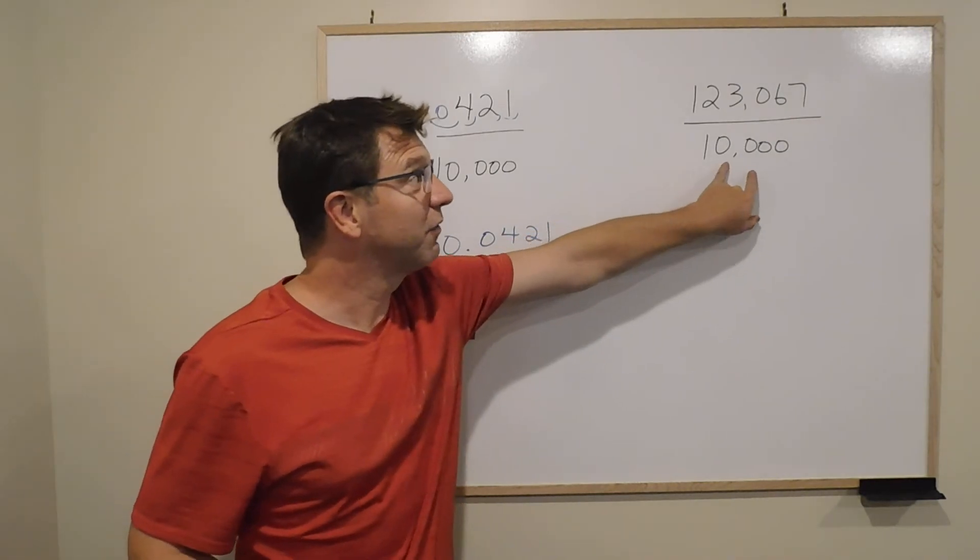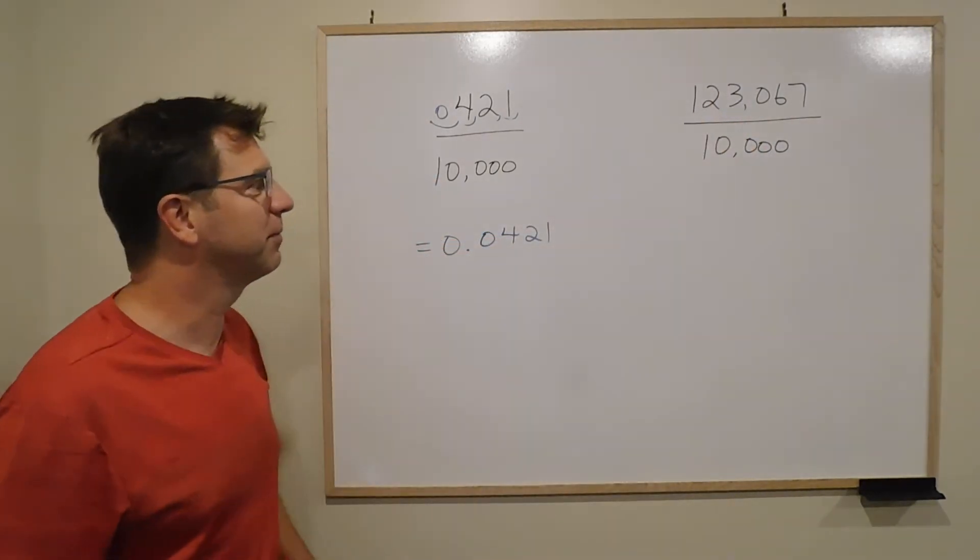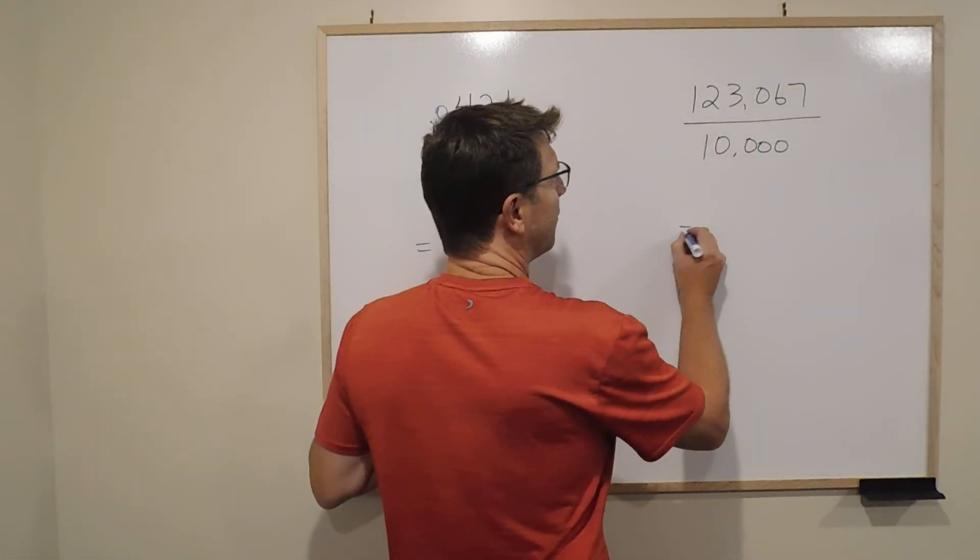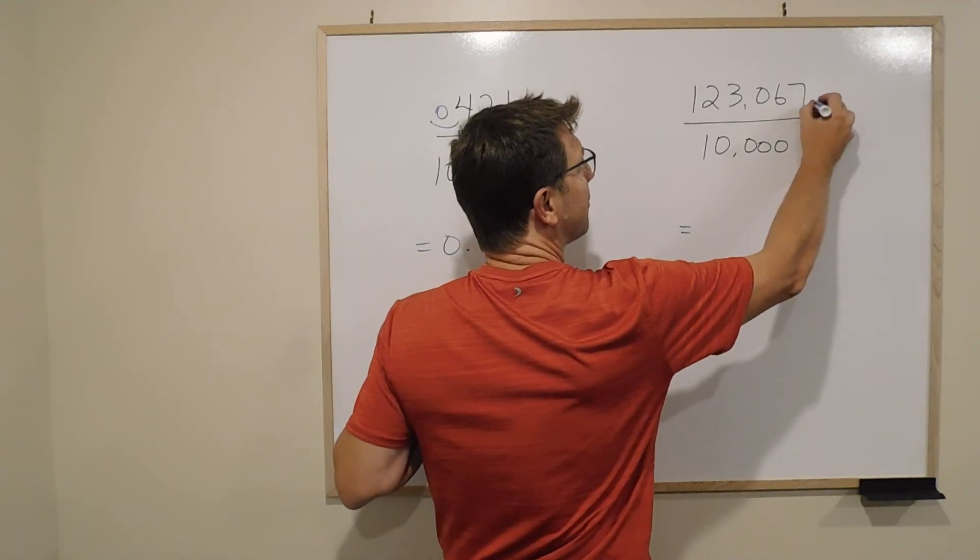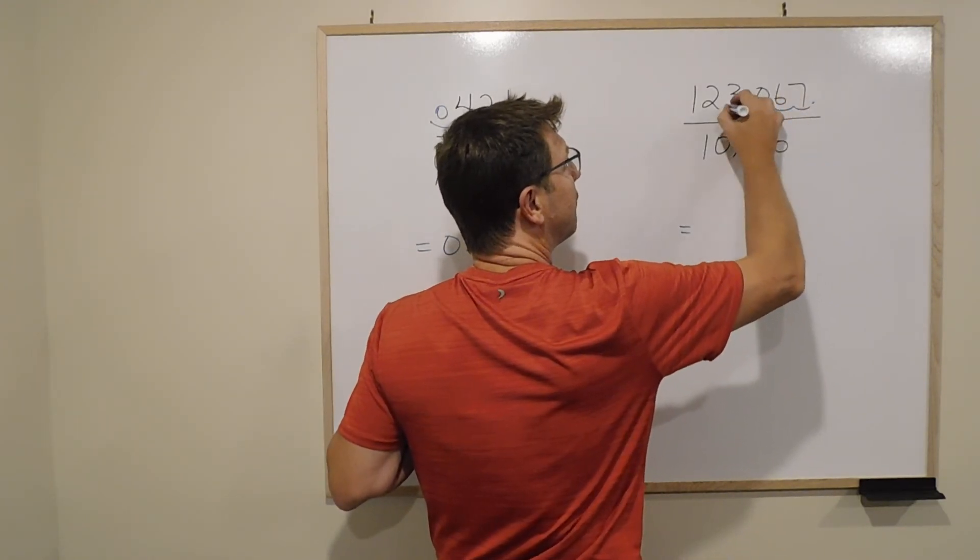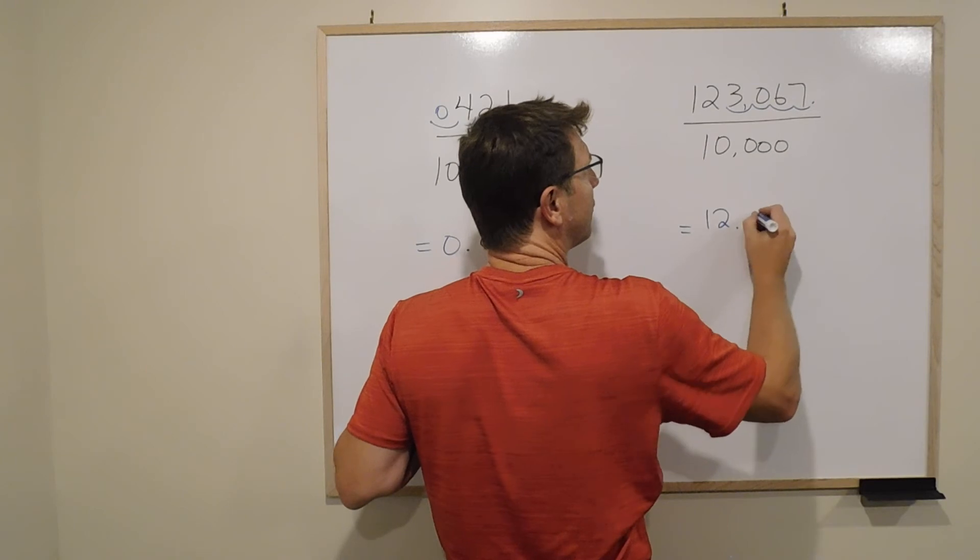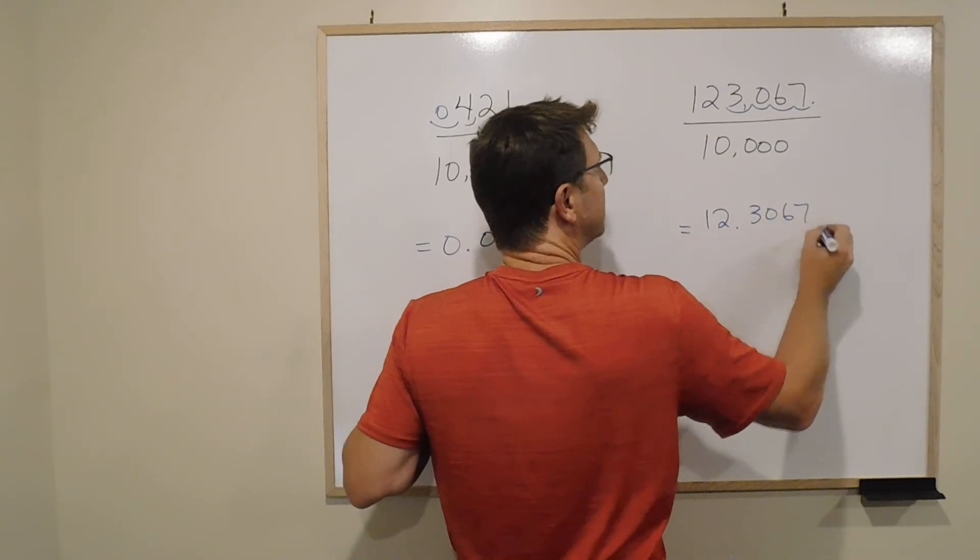Same thing here. There's four zeros, you're going to end up with four decimal places. So don't be surprised when the decimal was here: one, two, three, four. And you end up with an answer of 12.3067.